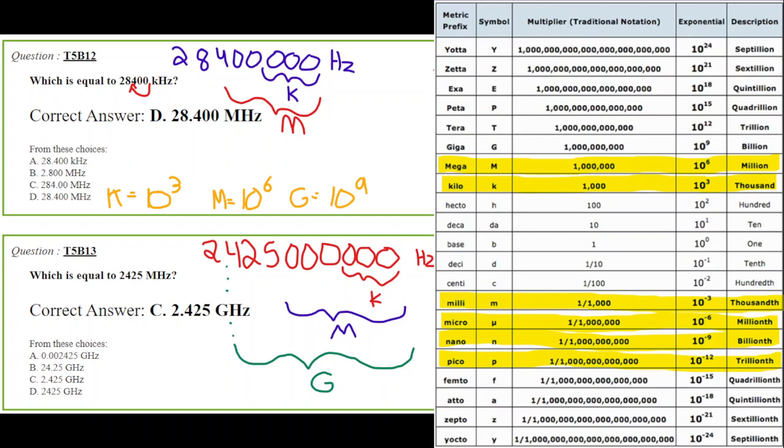This is not one of the answers. So then we have three choices of megahertz, which is 10 to the 6. Megahertz is 1, 2, 3, 4, 5, 6. So that gives us 28,400 megahertz. And that is your answer for number 12.